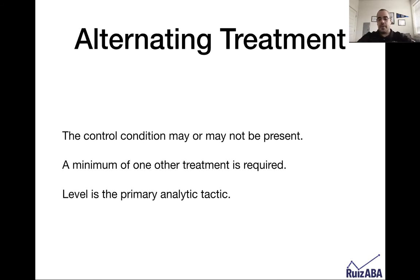In an alternating treatment, the control condition may or may not be present. In functional analysis, the control is usually a play or alone condition. But when you're just testing two things, there might not be a baseline because we already know that both work. A minimum of one other treatment besides the original is always required. Unique to this design, level is the one you're going to primarily be looking at — you conduct all the sessions you need, graph your data, and look at level mostly to determine which is most effective.